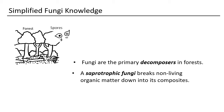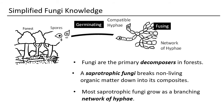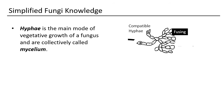In the air there are always some spores. When the conditions are right, they germinate and create hyphae. When hyphae meet, they can fuse and grow into a branching network. The collective growth of hyphae is called mycelium. Later I will show you some pictures of mycelium from my microscope.